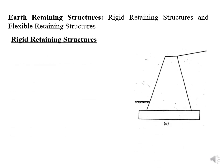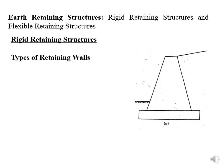The first category is rigid retaining structures. Under this heading we shall talk about the types of retaining walls. The first type is gravity retaining walls. One example of where we can use a retaining wall is wherever there is a chance of landslide — we can construct a retaining wall there.